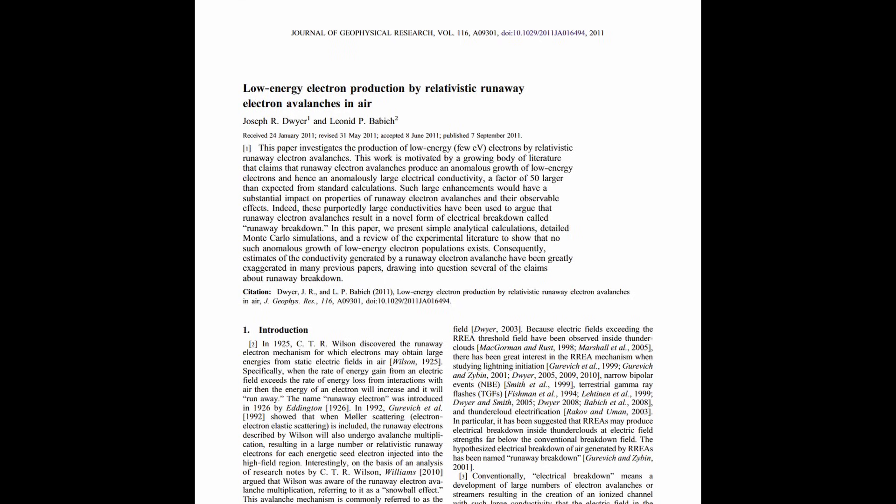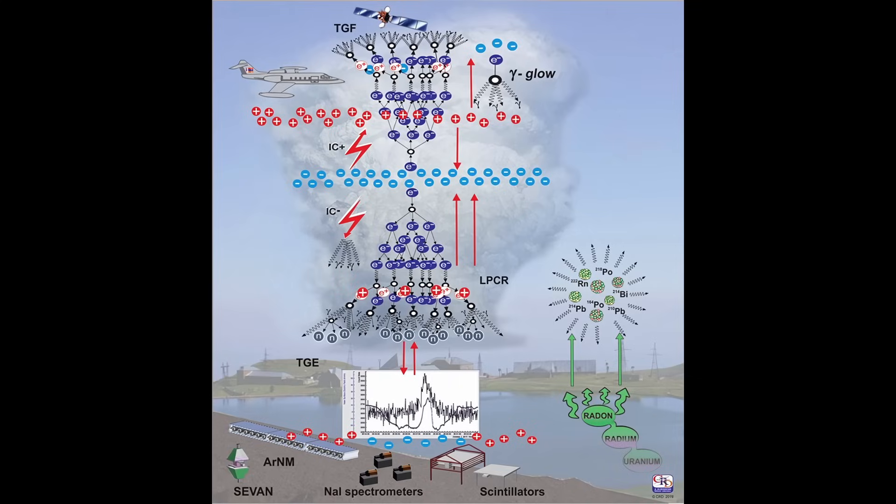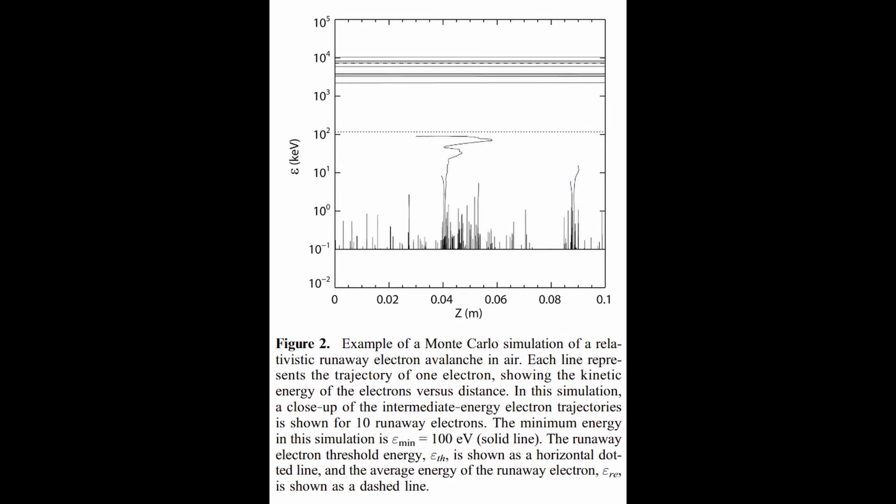However, researchers like Dwyer, Babich and others have demonstrated that while relativistic runaway electron avalanches initiated by cosmic rays can eventually lead to regions with intensified electric fields, they are incapable of directly instigating lightning.